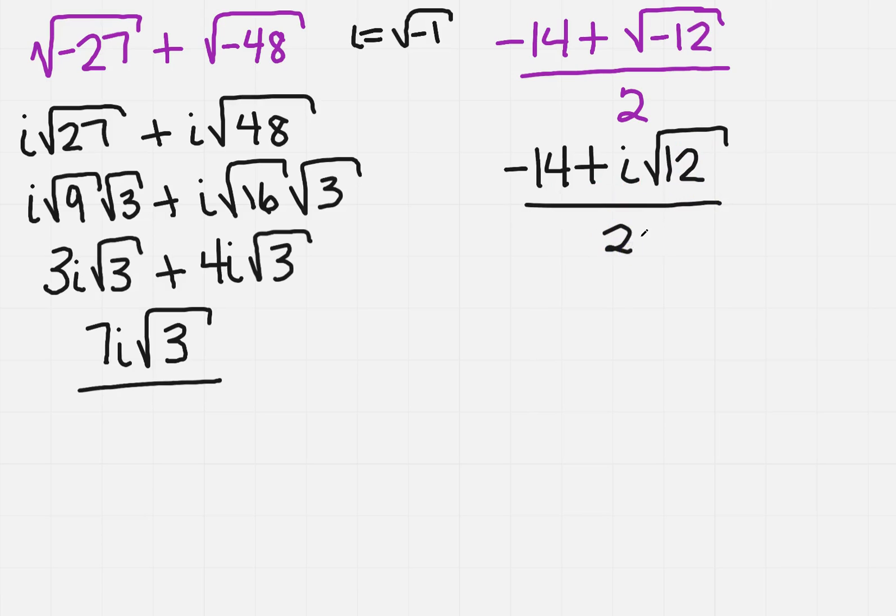And then I've got a 2 on the bottom. Now, remember, you can't simplify the numerator and the denominator until you have a factor that you can take out of each term. So what I'm going to do is I need to figure out, are there any perfect squares in 12? Well, sure, it's 4 times 3. And that's still all over 2.